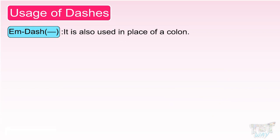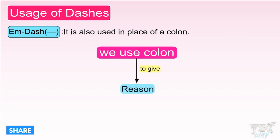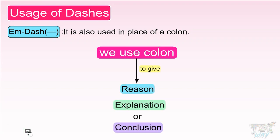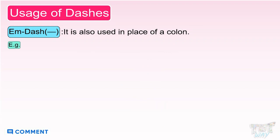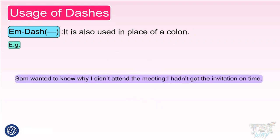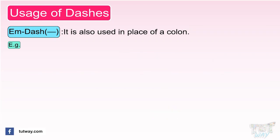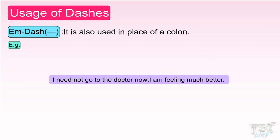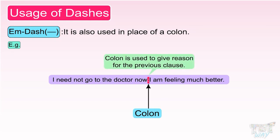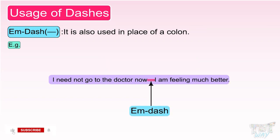M dash can also be used in place of a colon. We use colon to give a reason, explanation, or conclusion. For example: 'Sam wanted to know why I didn't attend the meeting—I hadn't got the invitation on time.' Here, the dash is used to give the reason for the previous clause. 'I need not go to the doctor now—I am feeling much better.' Here, the dash gives the reason for the previous clause. You can replace a colon with an M dash, but remember, M dash is less formal than the colon.